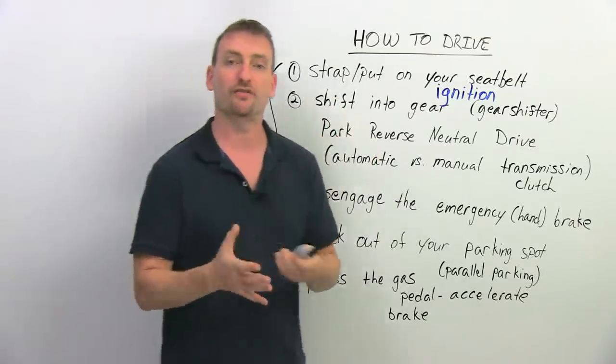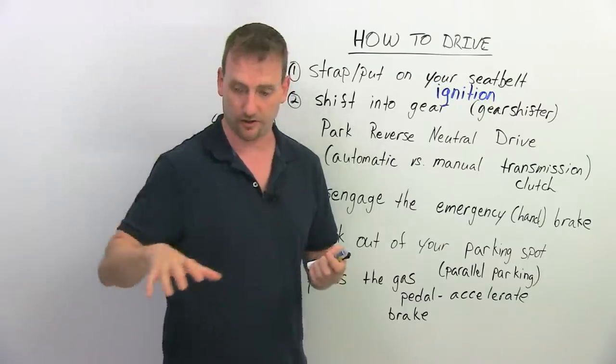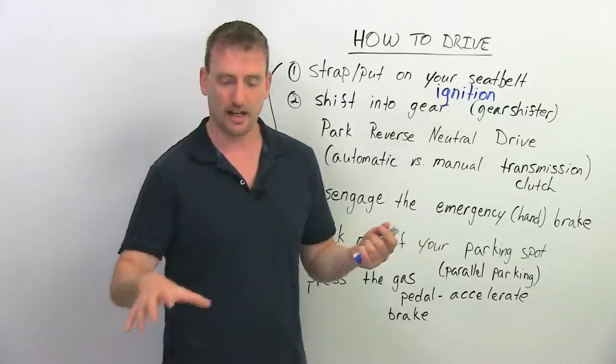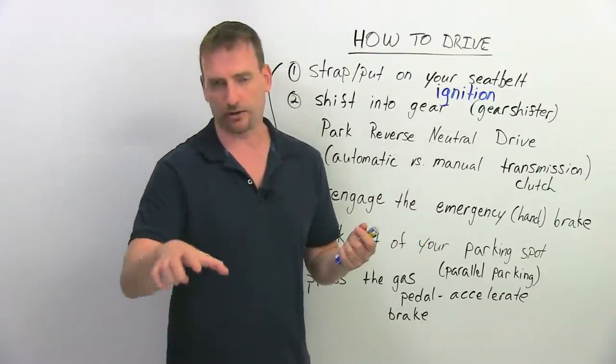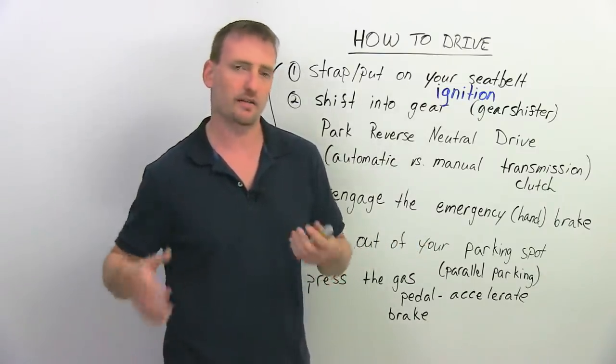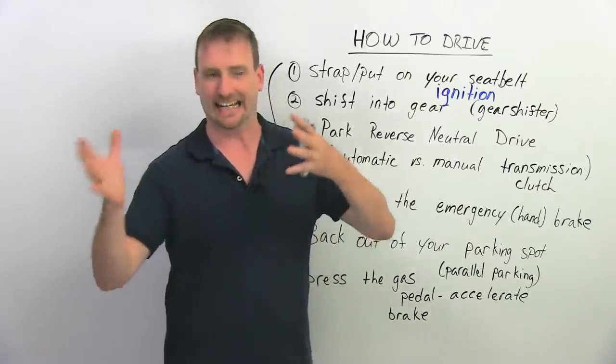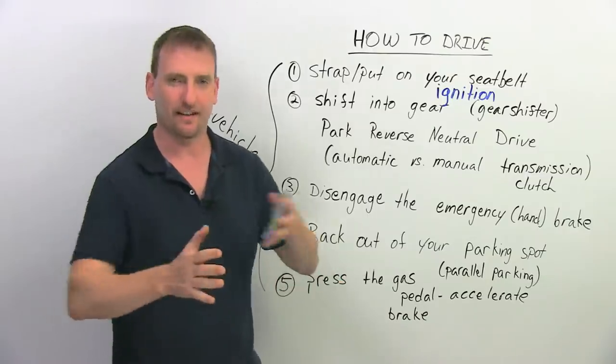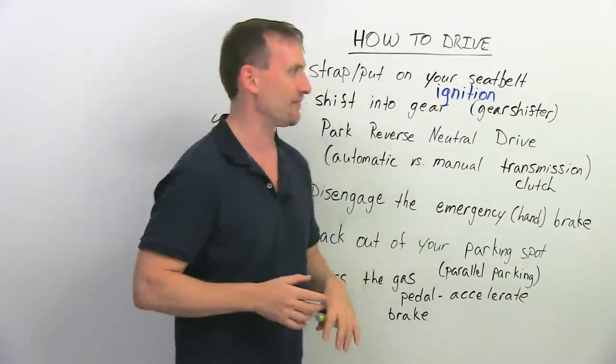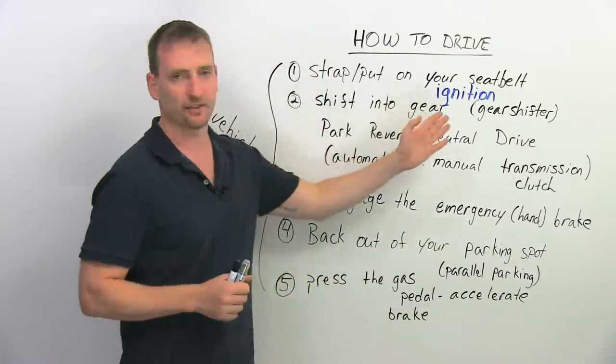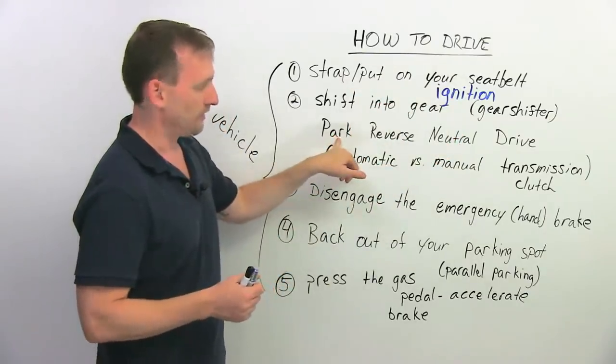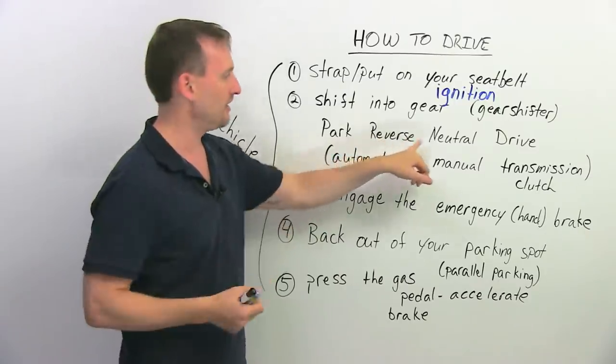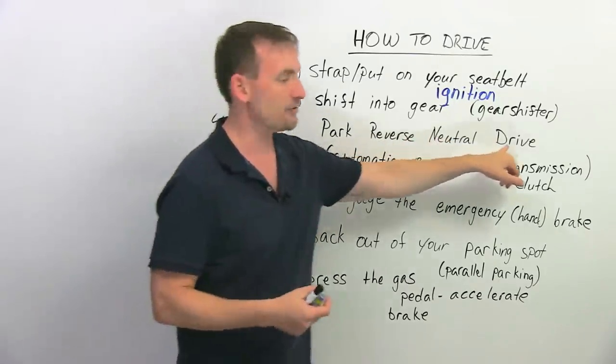So the first thing you want to do is shift into gear. You have your gear shifter, usually it's on the side if you're in an automatic car or in a manual transmission. In an automatic, all you do is put it into the gear you want and you go. The gears that you have are park, P, reverse, R, neutral, N, and drive, D.